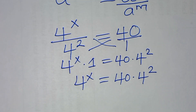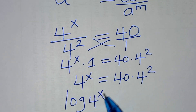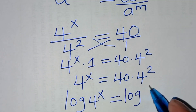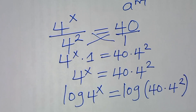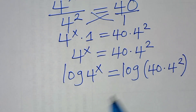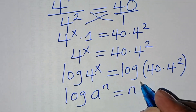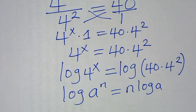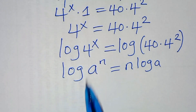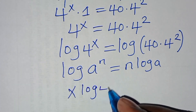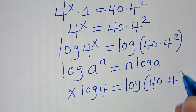To solve for the value of x, we introduce logarithm on both sides. Now log 4 to the power x is in the form of log a to the power n, which we can express as n log a. Applying this power property of logarithm, log 4 to the power x becomes x log 4. This is equal to log of 40 times 4 to the power 2.